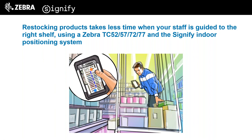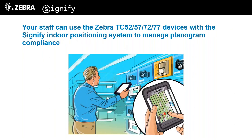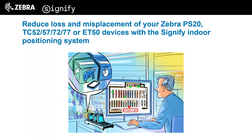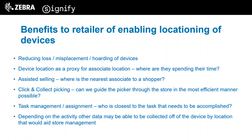Restocking takes less time because you can geo-tag areas that need to be restocked. You can also do planogram compliance - because you can tag exactly where products are located on a shelf, with such high accuracy you can distinguish between products which are a metre apart. You can also reduce loss and misplacement of devices, because with this solution running on a PS20 it can record its current location or at least its last known location. So if one goes missing, you'll be able to find its last location.